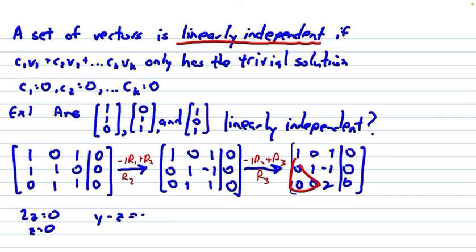y minus z equals 0. y minus 0 equals 0. So, y equals 0.